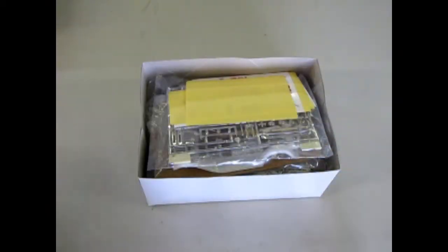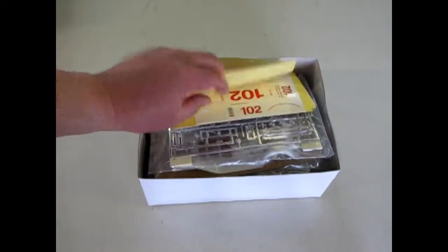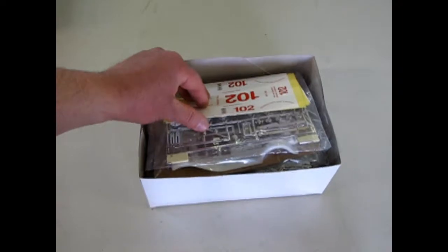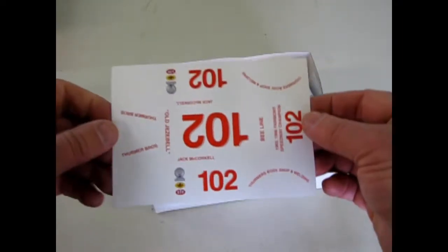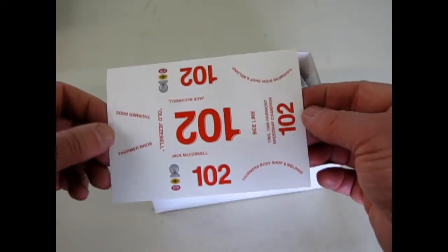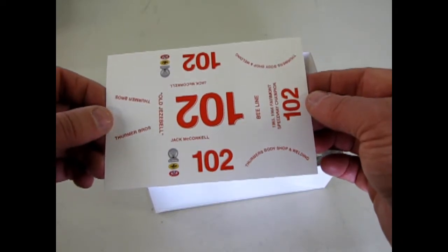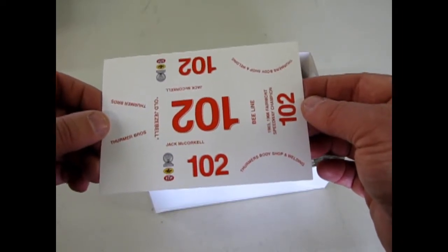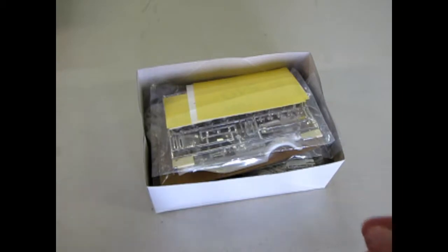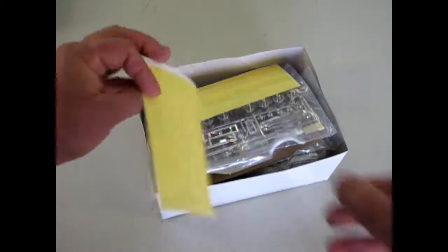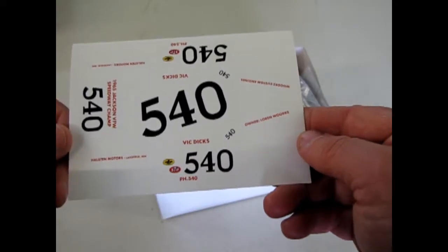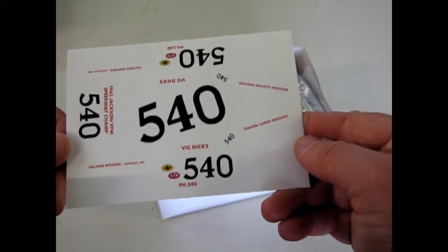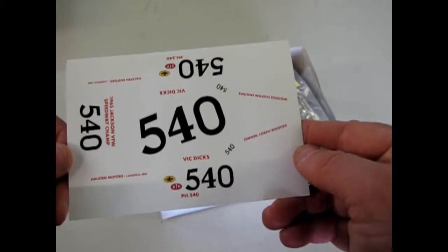And to go along with this, they give you a complete set of stock car decals. Very different ones. There's 102, the Thrummer Brothers. Here is 540, the Jackson VFW Speedway Champ.